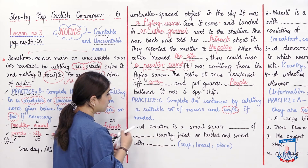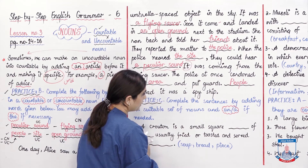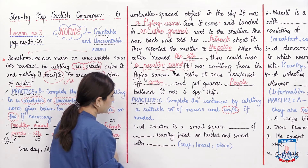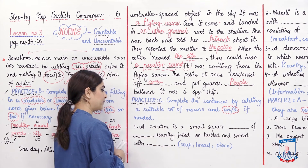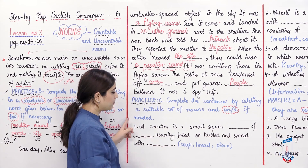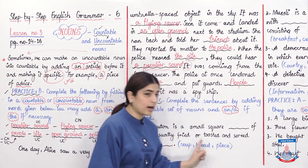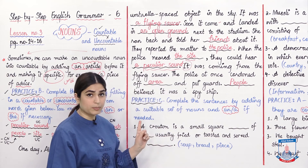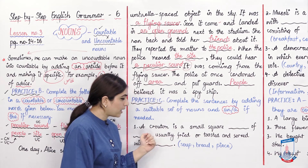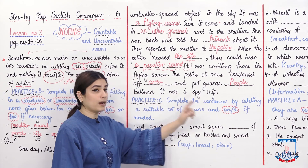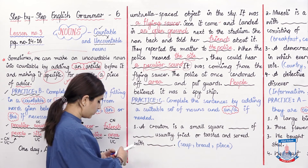The next exercise in your book is Practice C. Complete the sentences by adding a suitable set of nouns and 'an' if needed. Each sentence gives you some noun options to choose from, and where articles are required, you should add them.